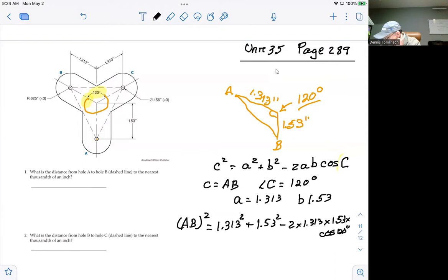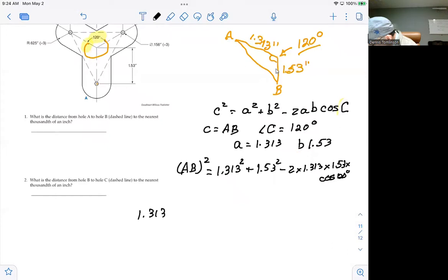So on the calculator, the keystrokes to do that would be 1.313 squared plus 1.53 squared minus 2 times 1.313 times 1.53 times the cosine of 120. And you can put an ending parenthesis there if you want to. It's not really all that necessary.